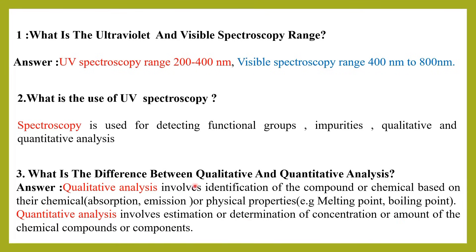In summary: in qualitative analysis, compounds are identified based on their chemical or physical properties; in quantitative analysis, the concentration or amount of the chemical compound is estimated.